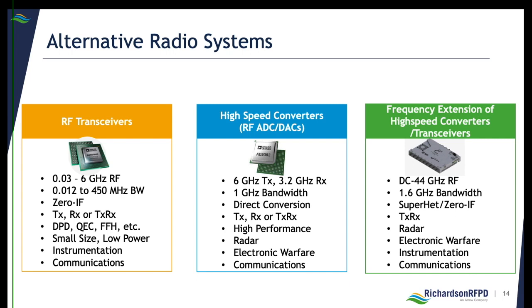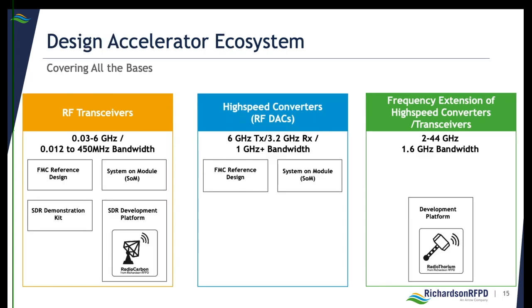Finally, the wideband converters cover the most spectrum, from DC to 44 GHz, as well as the widest usable bandwidth of up to 1.6 GHz for the most demanding applications. This slide summarizes the available design accelerators that we offer by radio technology. You can see we are covering multiple bases, and there are a lot of tools to leverage, depending on which technology is your best fit. And with that, I will hand this over to Larry Hawkins.